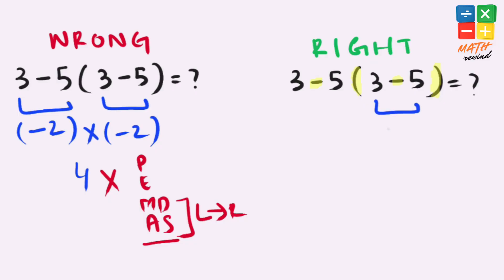We have 3 minus 5, that gives us negative 2, and our expression simplifies to 3 minus 5 times negative 2, because we have that multiplication operator present here.